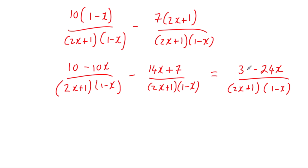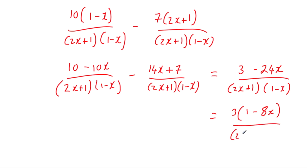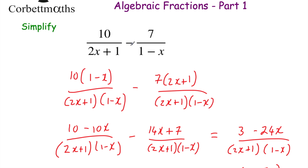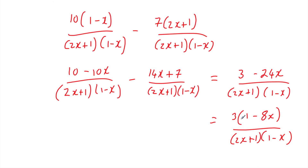Now I notice we can factorise the numerator. 3 − 24x: both terms are divisible by 3, so we get 3(1 − 8x). That bracket isn't one of the two factors in the denominator, so we can't cancel it down further. The final answer for simplifying 10/(2x + 1) − 7/(1 − x) is 3(1 − 8x) / [(2x + 1)(1 − x)]. It's important to always check whether the numerator factorises to see if you can simplify further.